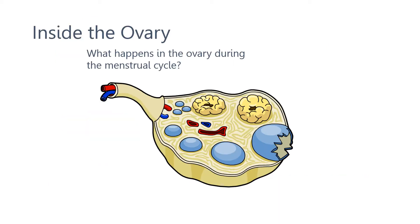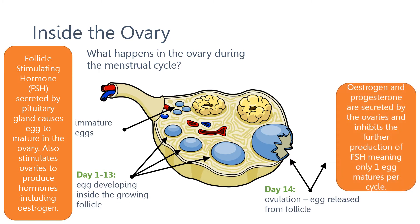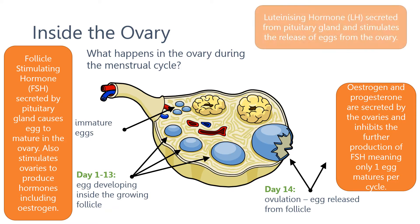Several hormones are involved in the menstrual cycle of a woman. Follicle stimulating hormone, or FSH, is secreted by the pituitary gland and causes eggs to mature in the ovary. It also stimulates the ovaries to produce hormones including estrogen. Estrogen and progesterone are secreted by the ovary and they inhibit the production of FSH, which means that only one egg will mature per cycle.